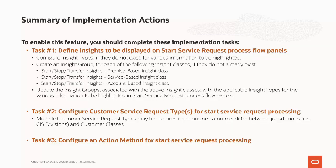There are three main tasks that you should complete to enable the new capability. First, you define the possible insights or information to be highlighted on the applicable start service request process flow panels. This occurs via insight types and insight groups. There are several insight types already provided. To highlight additional insights, you can configure new insight types to meet an implementation's business needs. You must also configure insight groups for the three specific insight classes shown here if the groups do not already exist. You will then update each insight group with the insight types to be highlighted.